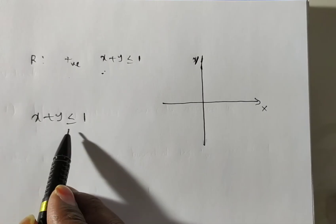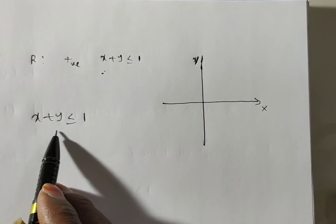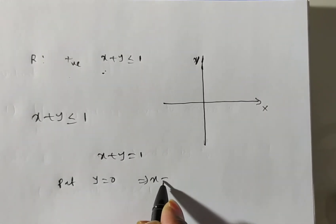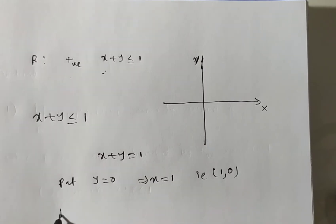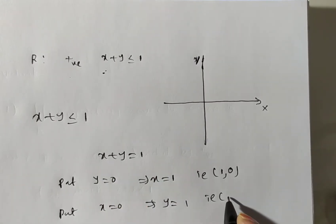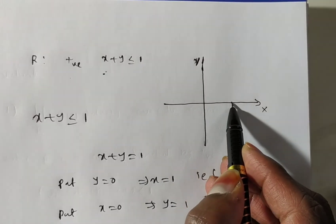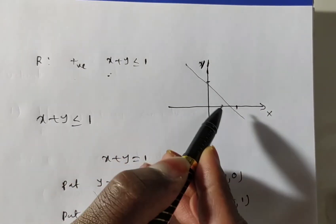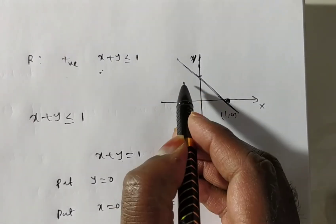Similarly, for x plus y equal to 1: put y equal to 0, then x equal to 1, giving point (1, 0). Put x equal to 0, then y equal to 1, giving point (0, 1). So plot these values: 1 comma 0 on the x-axis and 0 comma 1 on the y-axis.